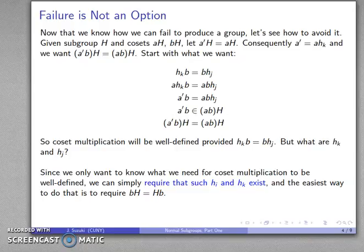And the easiest way we can do that is to just require that bH and Hb - this left coset and the corresponding right coset - we can require that those have to be the same thing.